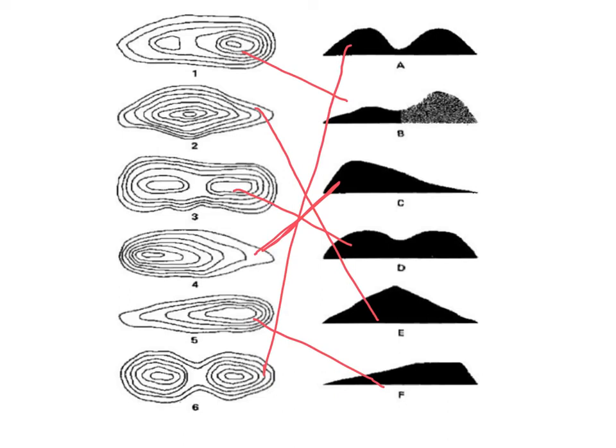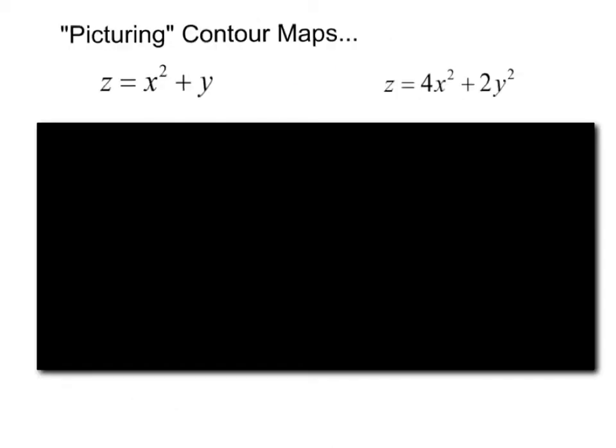So, that is one way of looking and getting an idea of how something would look in three dimensions, is to think about its contour map.